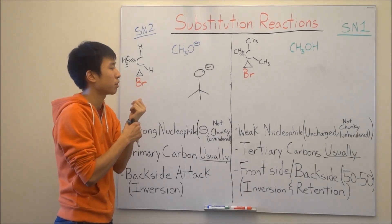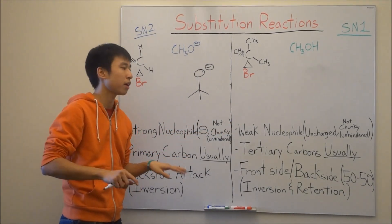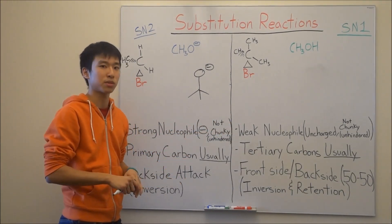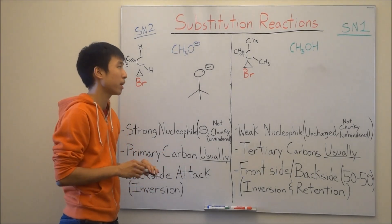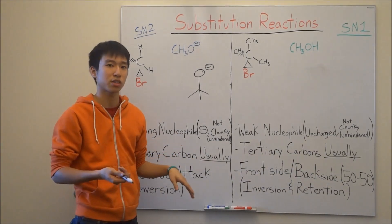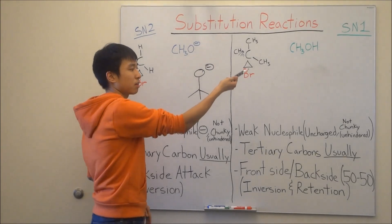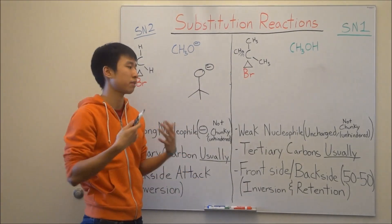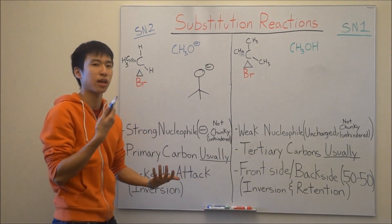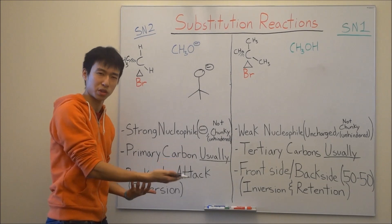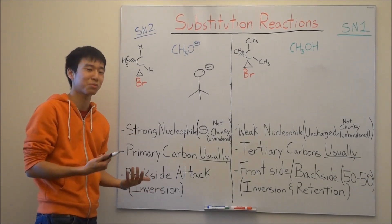For a weak nucleophile, you can kind of think of it as just a standard regular missile that you see in your movies and stuff. It doesn't release radiation when it hits its target, because methanol in this case is not charged and doesn't have an excess of electrons — it's not as strong as a nuclear missile. Does that make sense? Hopefully that helps.